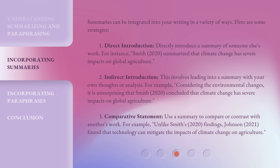Strategy 3: Comparison — use summaries to contrast different sources. For example: unlike Smith's (2020) findings, Johnson (2021) found that technology can mitigate the impacts of climate change on agriculture.